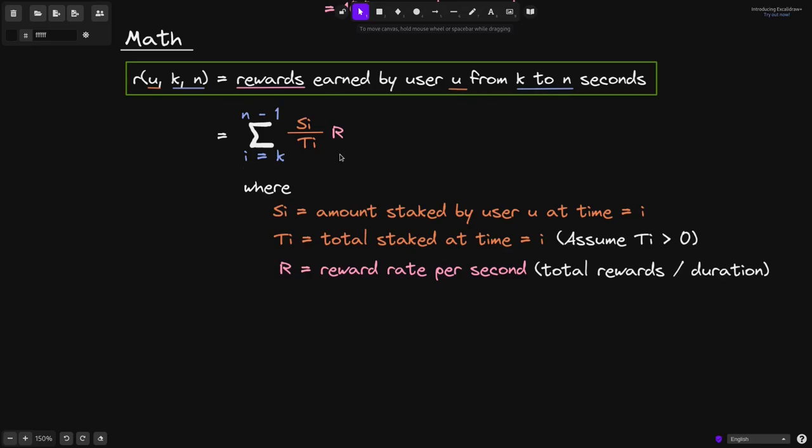However, if you were to translate this equation into solidity code, since it's running a for loop, there's a chance that it uses up too much gas. Luckily, there's another way to write the same equation that will use less gas. So let me show you how to write this equation in another way, and that will be the equation that is used inside the staking contract.